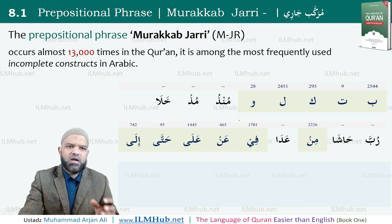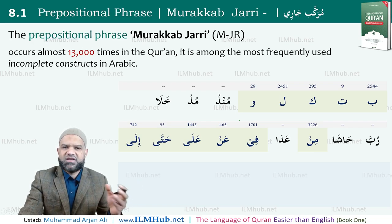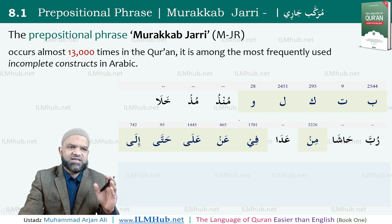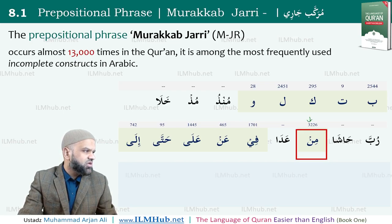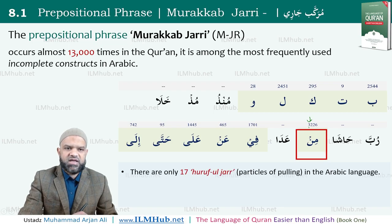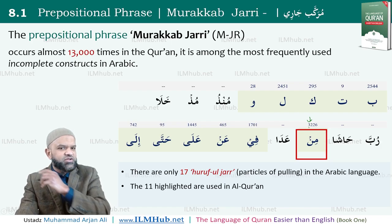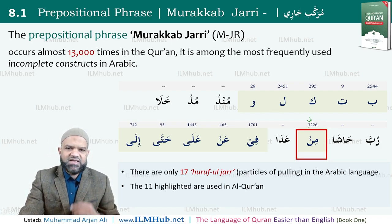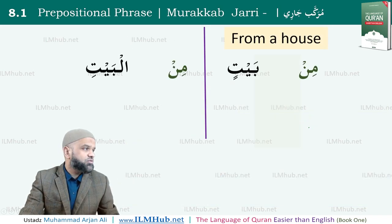The 17 huroof of jar are: بَا تَا كَافْ لَمْ وَا مُنْذُ مُذْ خَلَى رُبَّ حَاشَ مِنْ عَدَى فِي عَنْ عَلَى حَتَّى إِلَى. Only the highlighted 11 have been used in the Qur'an; some of the others are found in literature and hadith but not in the Qur'an. We will start with مِن, the most commonly used word in the Qur'an — appearing 3,226 times — and then look at all 11 used in the Qur'an.